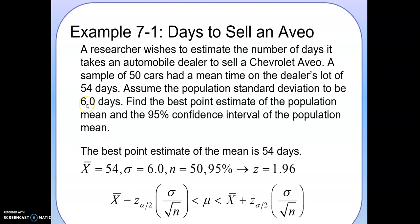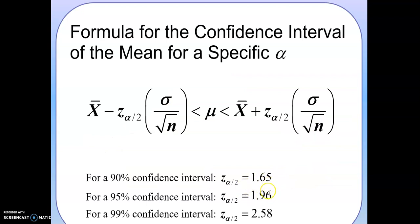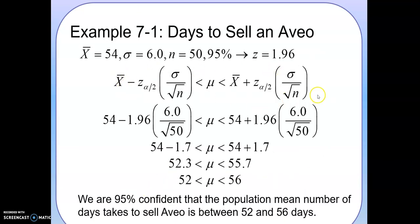The first thing you're going to find is the point estimate. That's the sample mean, x bar equal to 54. We know that sigma, the population standard deviation, is 6, and n is 50. And 95% confidence, the z is 1.96. All you have to do is take all these numbers and plug in this formula. So x bar is 54, sigma is 6, n is 50, and this is 1.96. Once we plug in everything and use the calculator, we are 95% confident that the population mean number of days it takes to sell an Aveo is between 52 and 56 days. We're 95% sure that all the Aveos in the world would take about 52 to 56 days to sell.